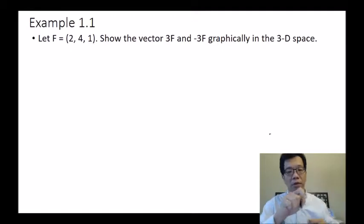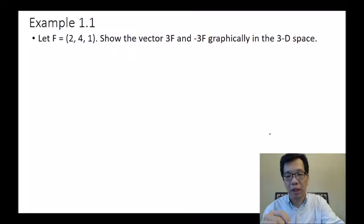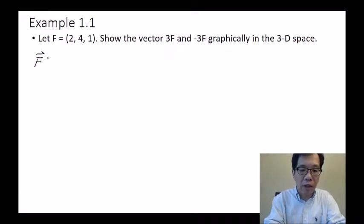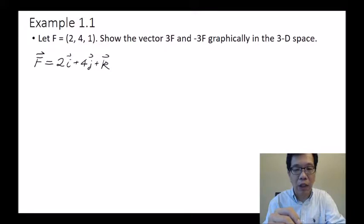The first problem is that f equals (2, 2, 4, and 1). We need to show the vectors 3f and negative 3f graphically in 3D space. For this problem, we don't want to use the numbers directly. We represent the vector as f equals 2i plus 4j plus k. The values 2, 4, and 1 are the magnitudes along three directions, and i, j, k are the unit vectors in those three directions.